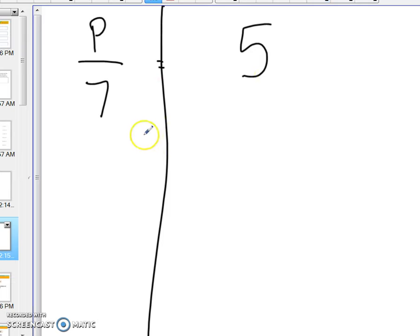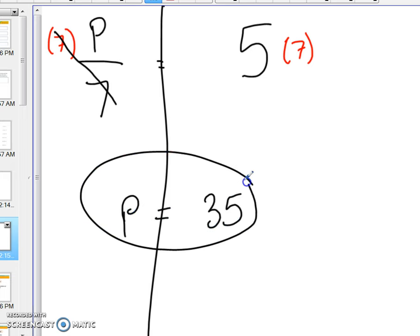Ask yourself, what do I need to do to this divided by 7 to get P alone? And the answer is the opposite. You do the opposite. You multiply by 7. Whatever I do on one side, I have to do to the other. Now these cancel out. We've already talked about why they cancel out. P equals 35. And that's basically the lesson for today.